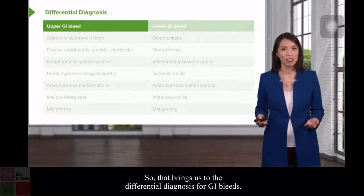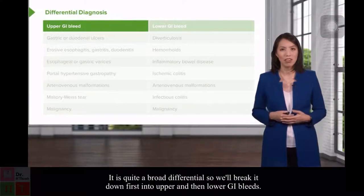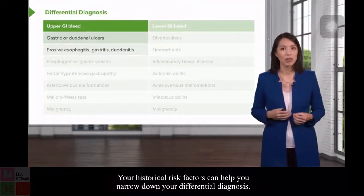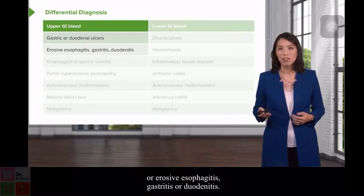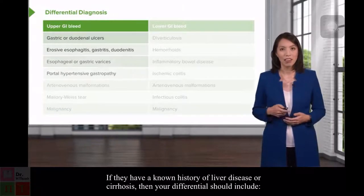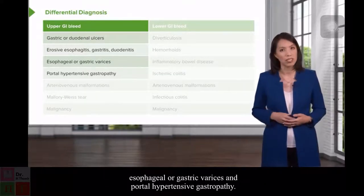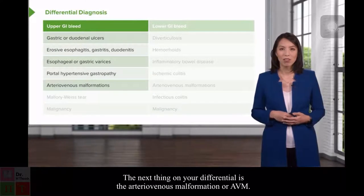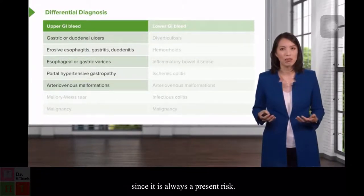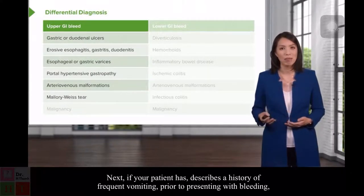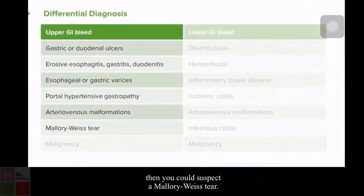That brings us to the differential diagnosis for GI bleeds — it is quite broad, so we'll break it down into upper and lower GI bleeds. Historical risk factors can help narrow the differential. If a patient presents with bleeding and heavy NSAID or alcohol use, the differential might include gastric or duodenal ulcers, erosive esophagitis, gastritis, or duodenitis. If they have known liver disease or cirrhosis, the differential should include esophageal or gastric varices and portal hypertensive gastropathy. Arteriovenous malformations (AVMs) are a rare but always-present cause. If the patient describes frequent vomiting prior to bleeding, you could suspect a Mallory-Weiss tear. Cancer should always be on the differential.